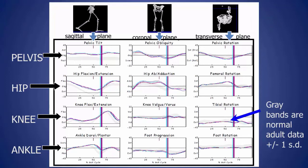Each lab can format their output a little differently, but in general most labs have a similar pattern. The first column is the sagittal plane, the second column is the coronal plane — front and back — and the third is the transverse plane.